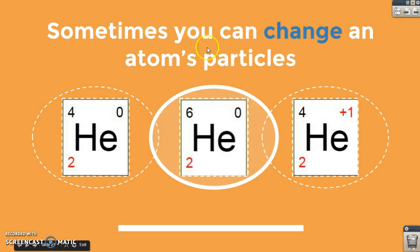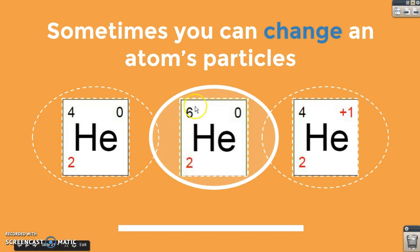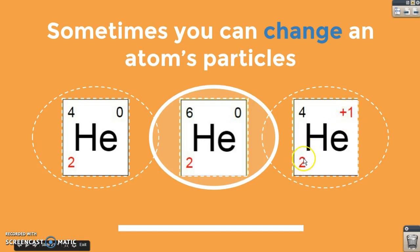We can change the particles in an atom. With four in the nucleus and two protons, we have two neutrons. With two protons and a mass of six, we have four neutrons. With two protons, a mass of four, but a +1 charge, we've lost one electron — we still have two electrons in the atom but the charge is positive because one electron was removed.